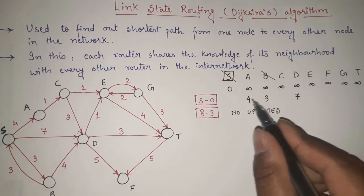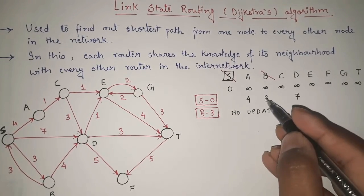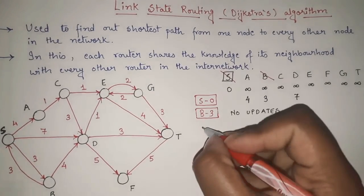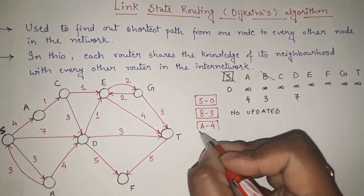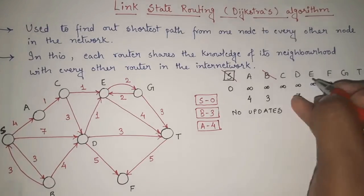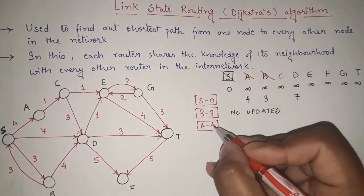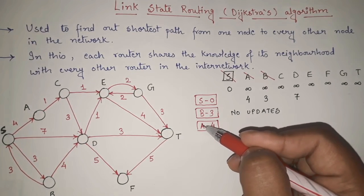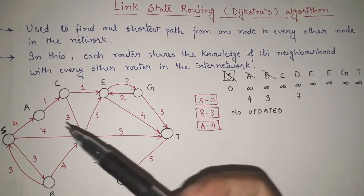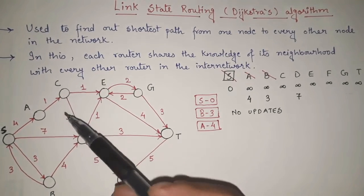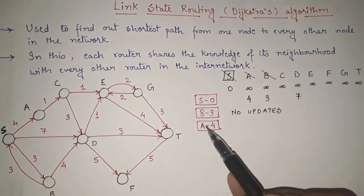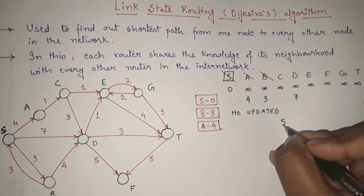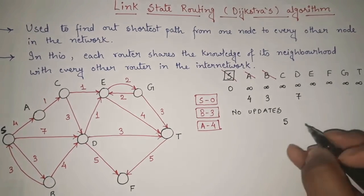Out of the remaining values — 4, 7, and infinite — the minimum is 4. So I finalize A as 4 and mark A as done. Now I check nodes adjacent to A. From A, I can directly go to only C with cost 1. Since S to A is 4, then S to C via A is 4 plus 1 = 5. The initial value of C was infinite, and 5 is less than infinite, so I update C to 5.